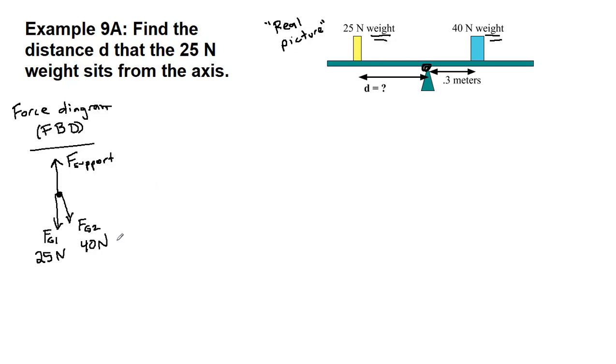If we look at this situation and we realize that F net equals zero because that's one of the two requirements for static equilibrium, then we'd be able to find out that the support force has to be 65 newtons up in order to balance the 25 plus 40 newtons down. That's not what's asked here, but that is something worth knowing because we're going to be using that in other examples.